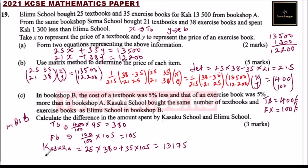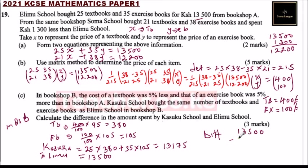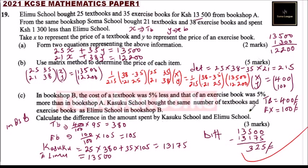Erimu spent 13,500 shillings as already given. Wait — Erimu's total from bookshop A was 13,500 but here we compare what Erimu would spend on 25 textbooks and 35 exercise books at bookshop A prices, which is 13,500. The difference is 13,500 minus 10,175 equals 325 shillings. So Erimu spent more by 325 shillings. If you do that question correctly you should be able to get full marks.